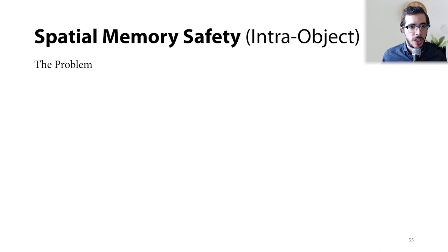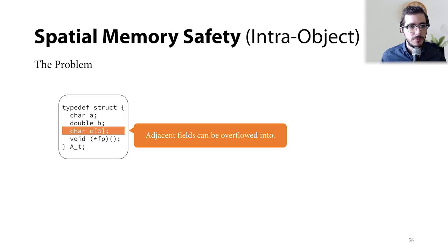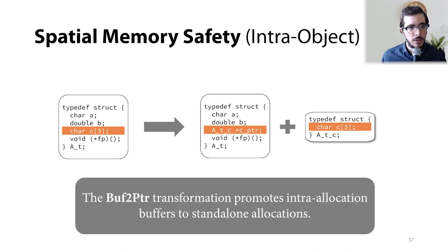But what about intra-object memory safety? Adjacent fields within the same allocation can be overflowed into. To achieve fine-grained intra-object memory safety, NoFat adopts the buffer-to-pointer promotion trick. We simply promote every intra-allocation buffer to a standalone allocation and replace it with a pointer using a source-to-source transformation. This way, all intra-object buffers will be protected using the regular NoFat protection.